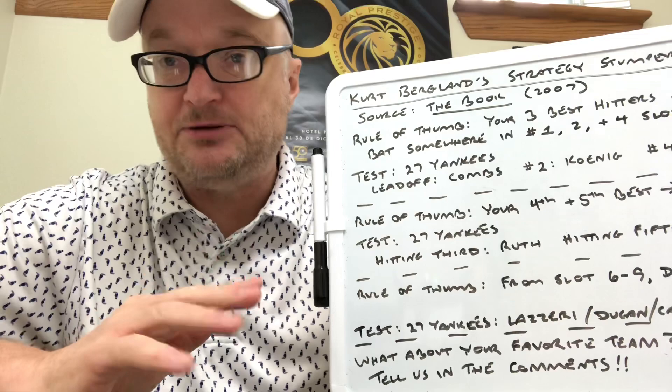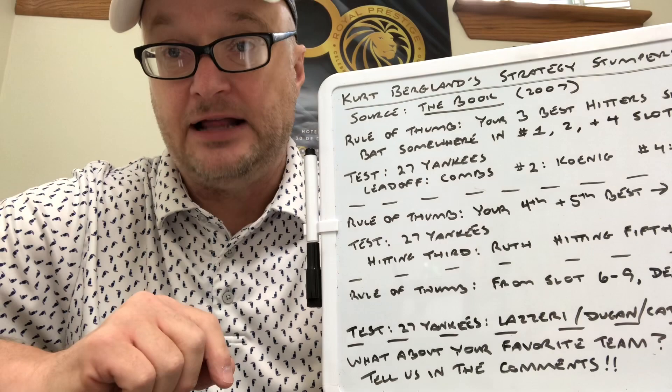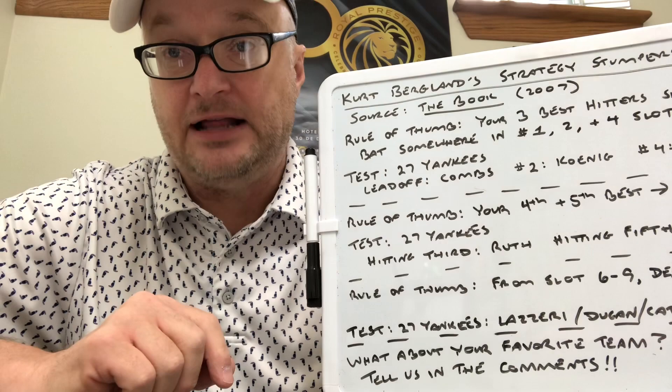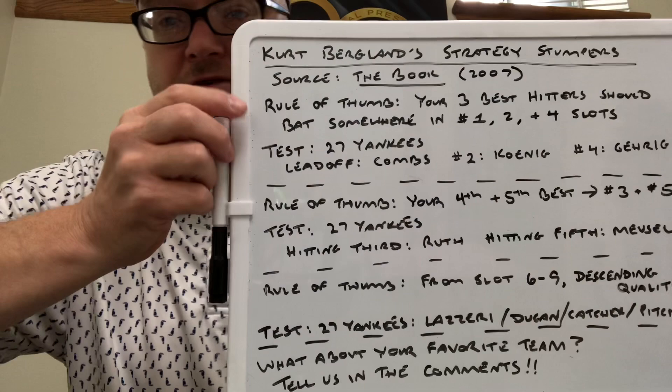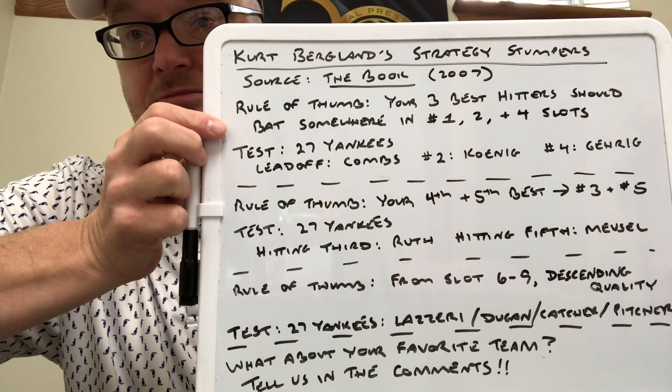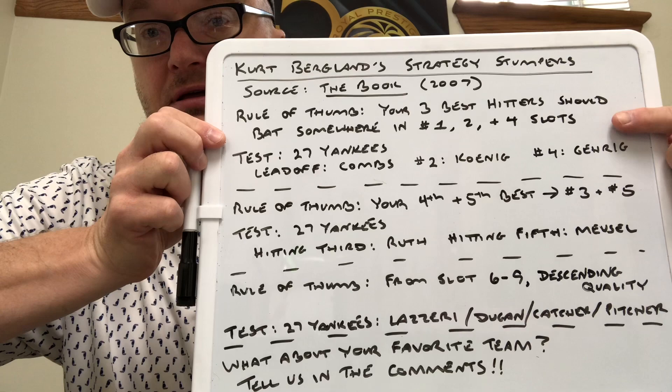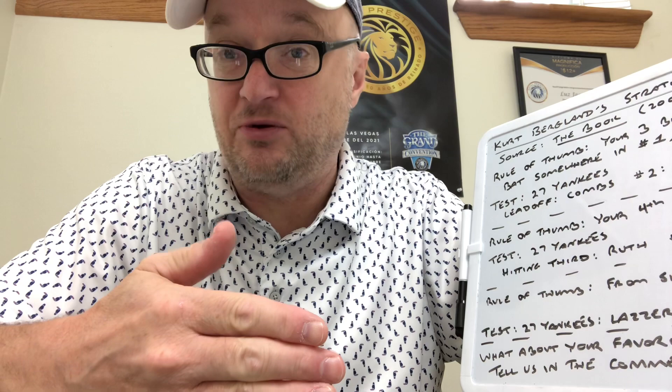Here is the list of the three rules of thumb. The first rule of thumb — to maximize run production from your nine players — is that your three best hitters should occupy spots 1, 2, and 4 in the batting order. This has to do with on-base ability and your ability to deliver runs. The number four hitter is very important in the event that you get a 1-2-3 first inning, because now you are starting the second inning with someone who can get on base and keep the train moving.